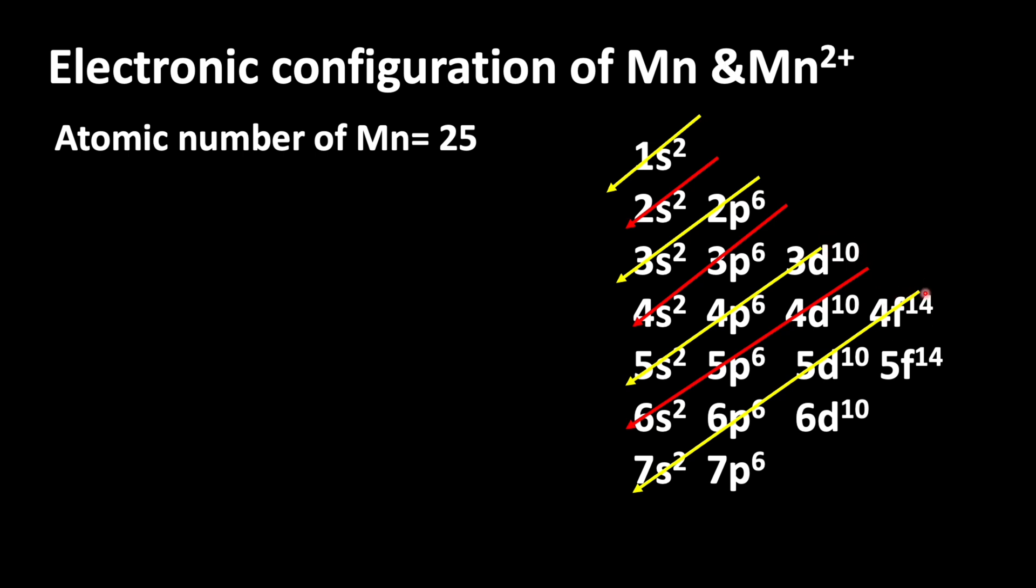Now we can write the electronic configuration by looking at this: 1s2, 2s2, 2p6, then 3s2, 3p6. Then you can see that after filling the 3p orbital, the electron enters into 4s orbital. So, 4s2 and 3d5.